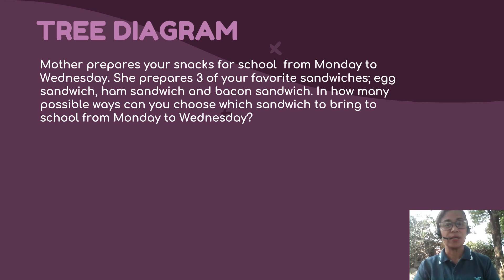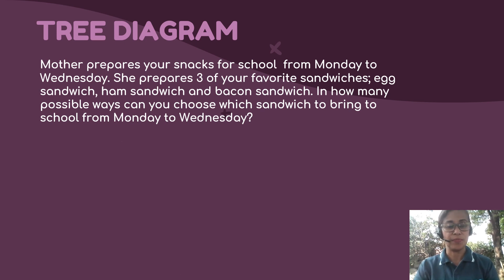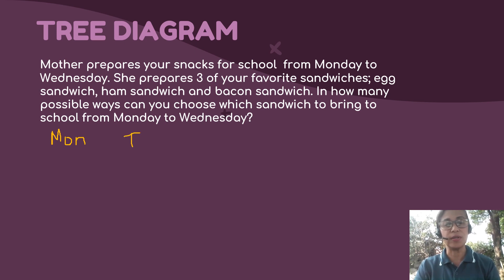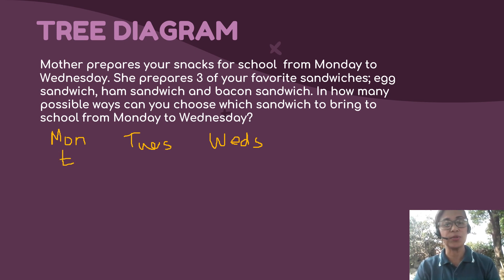A tree diagram is a method wherein you make a sketch out of a given problem to come up with your solution. Here's the problem: Mother prepares your snacks for school from Monday to Wednesday. She prepares 3 of your favorite sandwiches — egg, ham, and bacon. In how many possible ways can you choose which sandwich to bring to school from Monday to Wednesday? So we set up our tree diagram for Monday, Tuesday, and Wednesday.